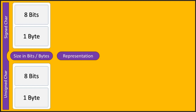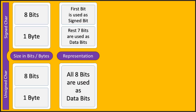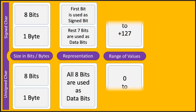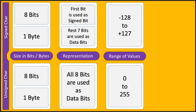The next parameter is representation. Unsigned character uses all 8 bits as data bits, whereas signed character uses the first bit — the most significant bit — as the sign bit and uses the remaining 7 bits as data bits. The next parameter is range of values: signed character ranges from -128 to +127, whereas unsigned character ranges from 0 to 255.